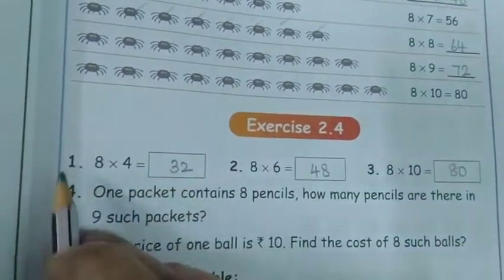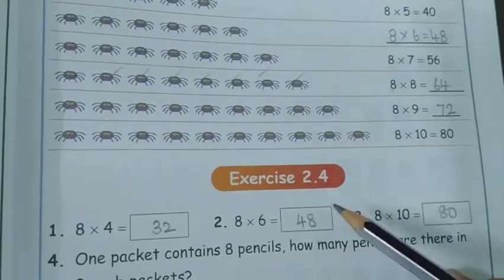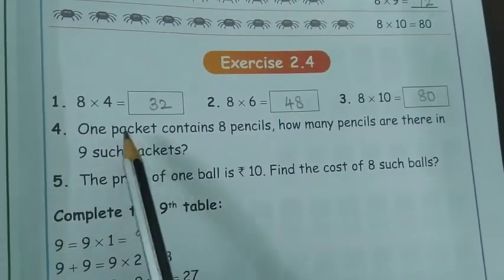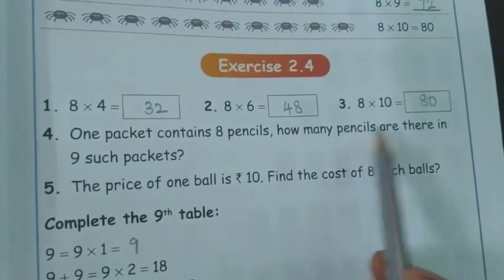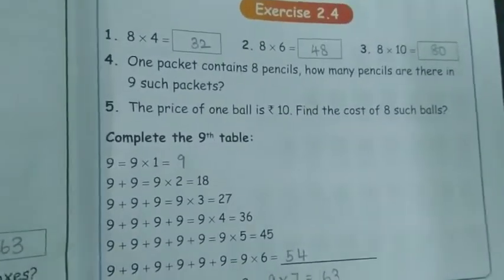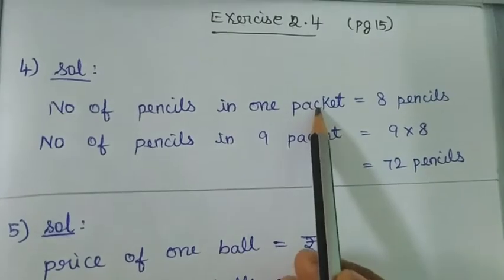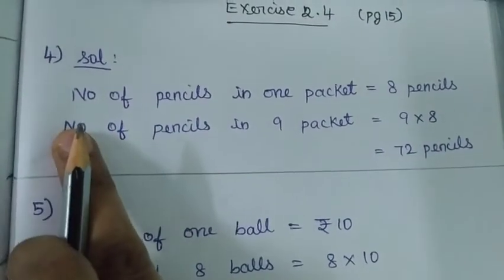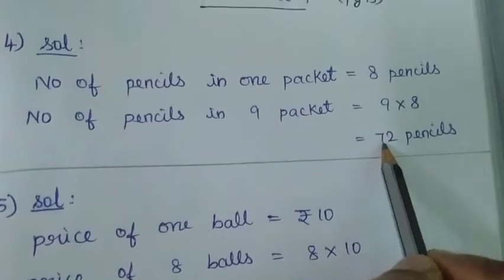Next, exercise 2.4. 8 fours are 32. Next, 8 sixes are 48. Next, 8 tens are 80. Next, fourth question word problem: one packet contains 8 pencils. We want to find out how many pencils are there in 9 such packets. Take the note and put exercise 2.4, page number 15. Number of pencils in one packet: 8 pencils. Number of pencils in 9 packets equals 9 eights are 72 pencils. This is the answer. Write in your fair note.